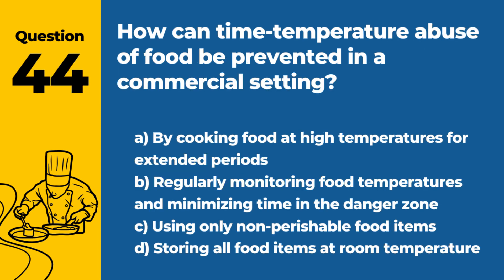Question 44: How can time temperature abuse of food be prevented in a commercial setting? a. By cooking food at high temperatures for extended periods. b. Regularly monitoring food temperatures and minimizing time in the danger zone. c. Using only non-perishable food items. d. Storing all food items at room temperature. Answer: b. Time temperature abuse can be prevented by regularly monitoring food temperatures and ensuring that food does not remain in the temperature danger zone (41°F to 135°F) for prolonged periods.